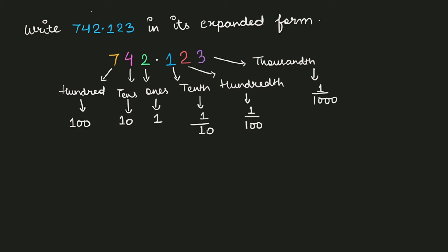So now what we have to do is basically we have to first multiply the digit with its place value and then sum up. So we will start from the left corner, the leftmost digit.